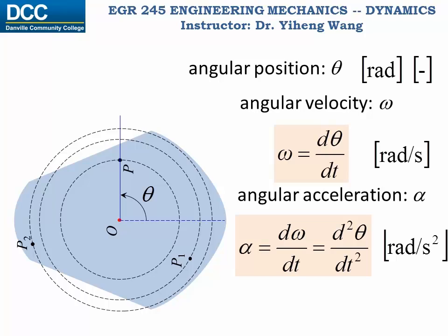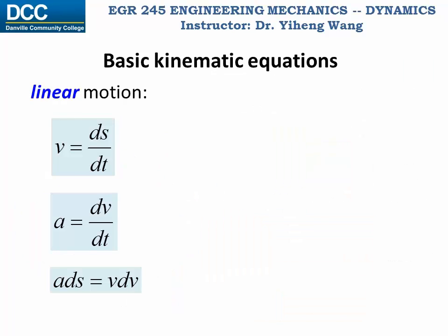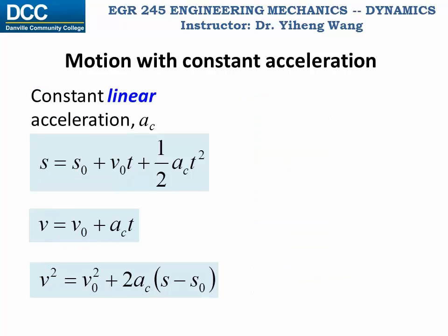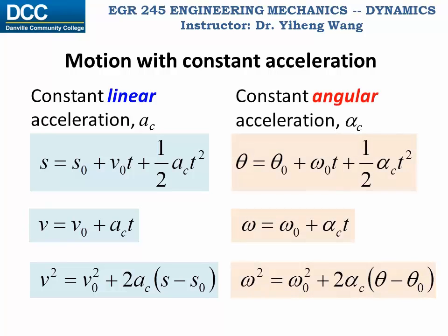Now if we cancel out dt from these two equations, we get the third kinematic equation: alpha d theta equals omega d omega. These should look very familiar, since we learned about the three basic kinematic equations for linear motion before, and now we have the three basic kinematic equations for angular motion, which have a very similar format. Just as those three equations apply to linear motion with constant acceleration a_c, we can also derive three equations that apply to angular motion with constant angular acceleration alpha_c.